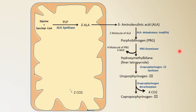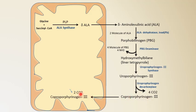Coproporphyrinogen III further enters into the mitochondria, so the remaining steps occur in the mitochondria. Coproporphyrinogen III undergoes oxidative decarboxylation with elimination of 2 molecules of CO2, catalyzed by coproporphyrinogen oxidase, and is converted to protoporphyrinogen IX.